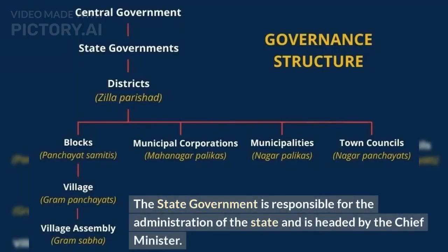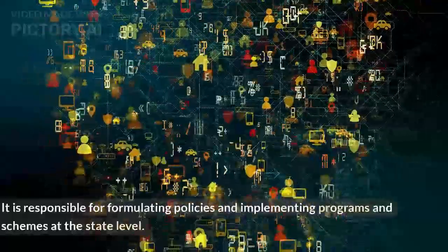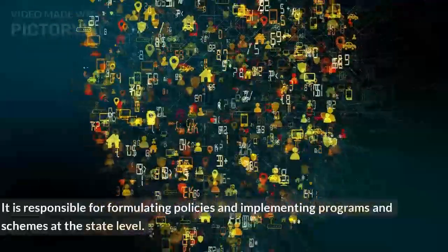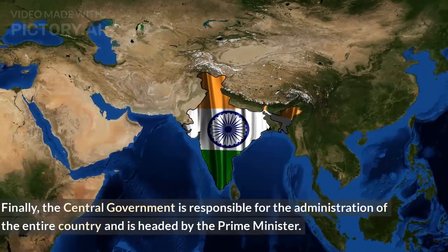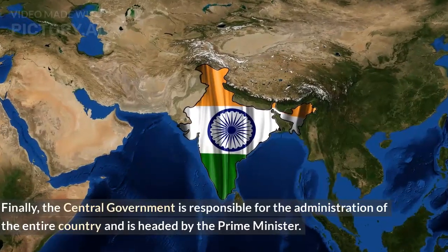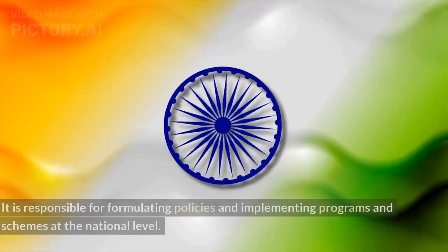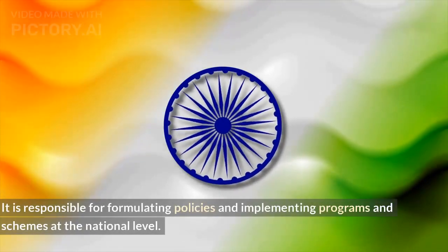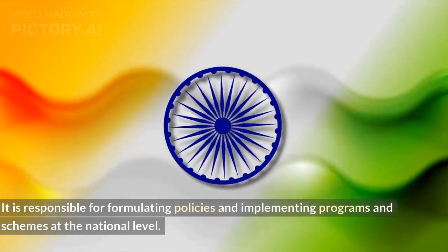The state government is responsible for the administration of the state and is headed by the chief minister. It is responsible for formulating policies and implementing programs and schemes at the state level. The central government is responsible for the administration of the entire country and is headed by the prime minister, formulating policies and implementing programs at the national level.